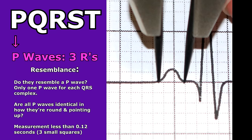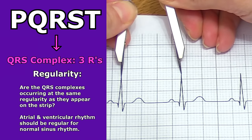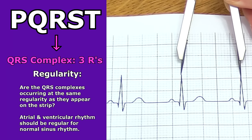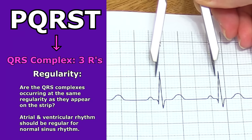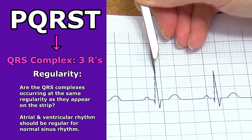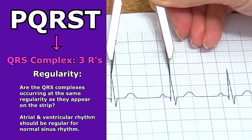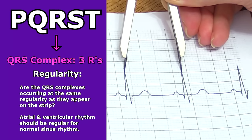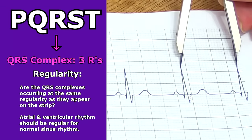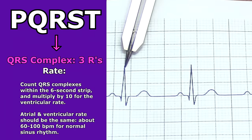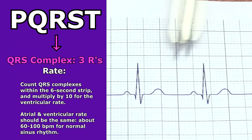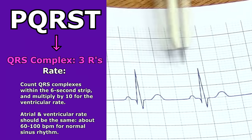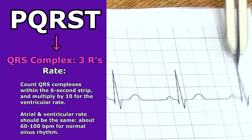Then apply the three R's to the QRS complex. Look at the regularity - are the QRS complexes occurring at the same regularity as the consecutive QRS complexes within the strip? This represents the ventricles. You can do this by taking your calipers, just like with the P waves, going from R wave to R wave. Both the atrial and ventricular rhythm regularity should be regular for it to be normal sinus rhythm, showing it originates in the SA node. Then look at the rate of the QRS complex within the six-second strip - count those complexes and multiply by 10 for the ventricular rate, which should be the same as the atrial rate, around 60 to 100 beats per minute.